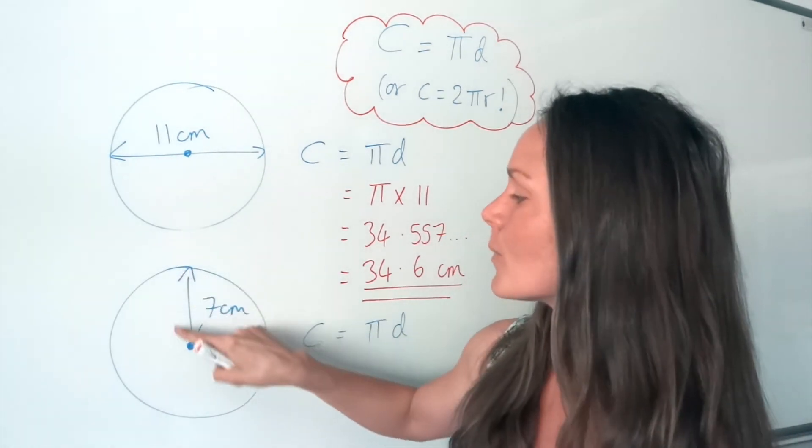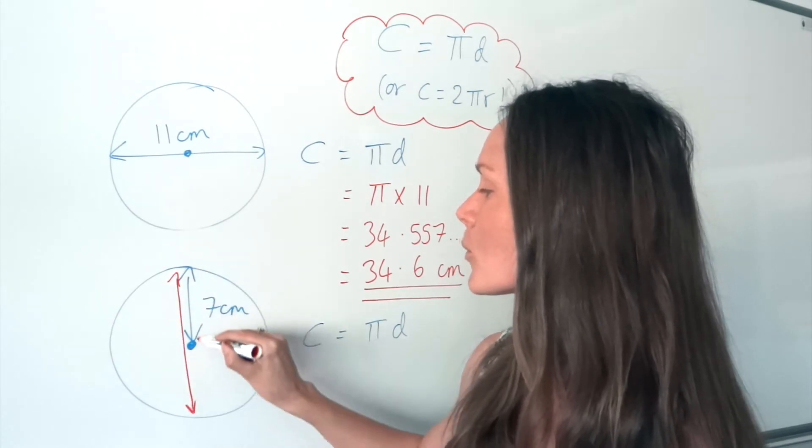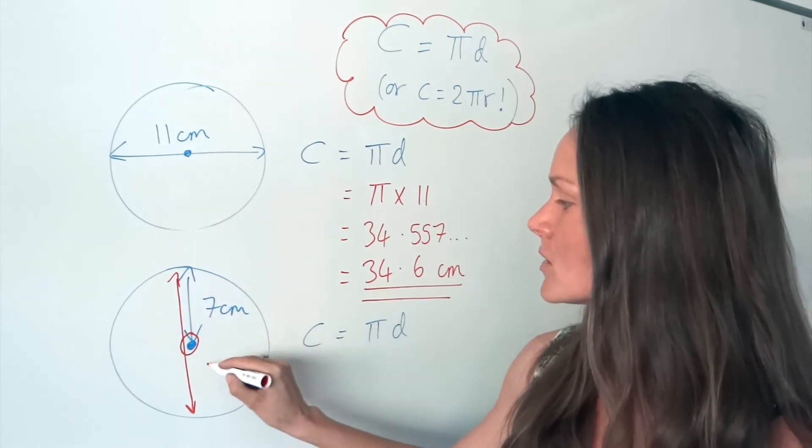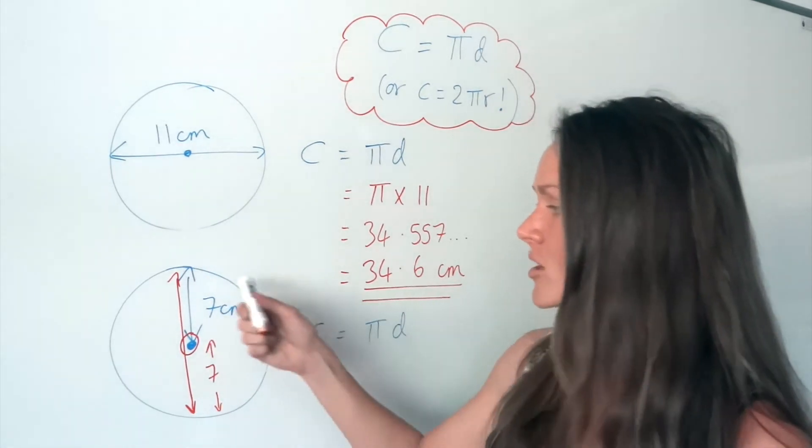So remember, the radius is halfway across the circle, but the diameter is all the way across the circle. So if this distance is 7, so is this one here, which means the diameter is just 7 plus 7, which is 14 centimetres.